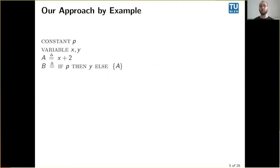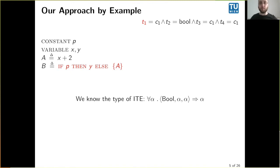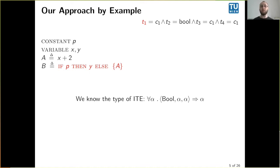Let's walk through an example—a very simple specification that does almost nothing, to show how we get constraints. The approach in a sentence: we look at every expression and sub-expression and assign each an SMT variable. In this case, the if-then-else expression 'if P then Y else' is assigned the SMT variable T1. When we read the solution, T1 holds the type of the body of P. The top-level body of P is defined with an if-then-else operator, which has a known type.